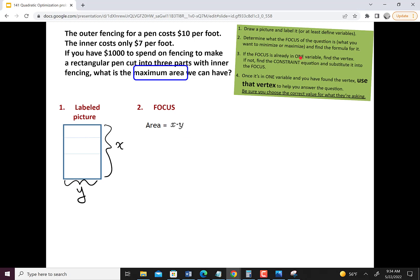Now that we have that focus, it's got two variables. We want it in one variable, so we need to do step three, which is find a constraint, and that's where the other information comes from.